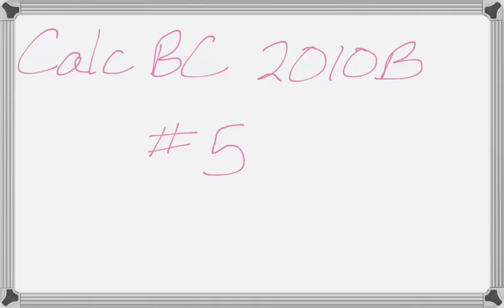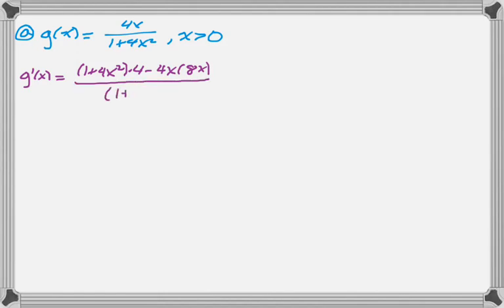This is number 5 from the 2010 Form B Calc BC exam. It's a problem about functions but requires a lot of thought. The first part is we need to find the absolute maximum and absolute minimum if they exist for this function on the interval from 0 to infinity. So, obviously, derivative. The derivative of this is bottom times the derivative of the top minus the top times the derivative of the bottom all over the bottom squared.